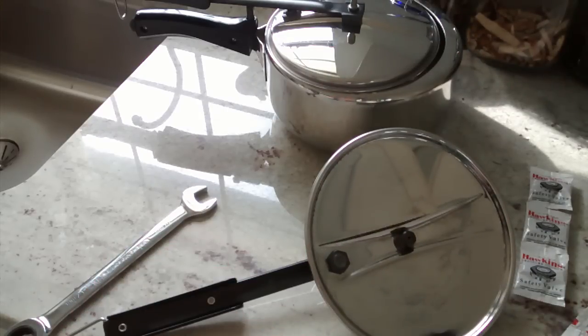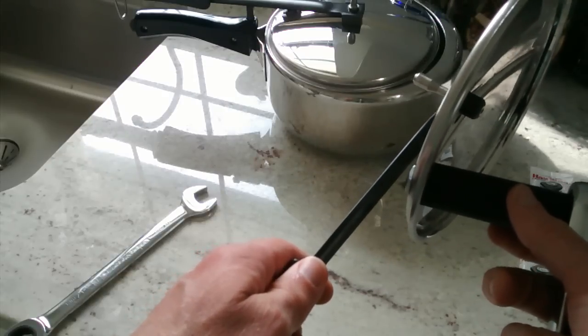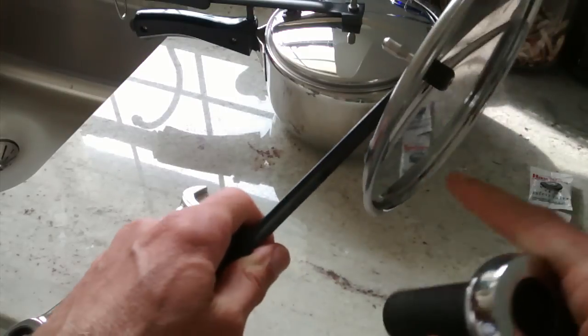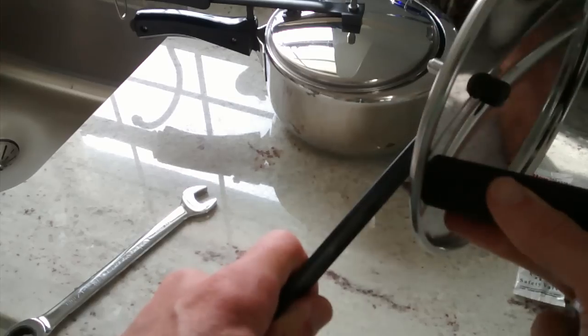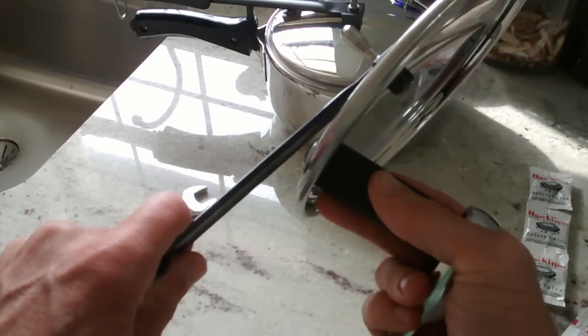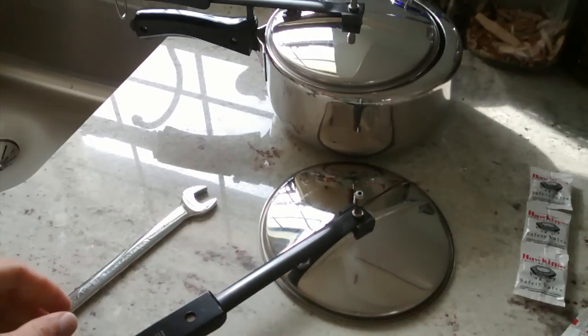You need 11/16th. You need a deep socket because the smaller ones won't really fit on there well, because the lid there is sort of beveled and you don't really get a good connection on it. So using a deep socket makes that easier.